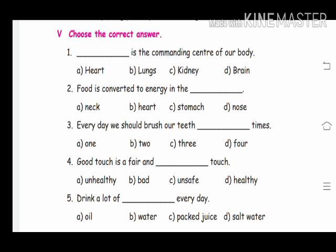Fourth one — good touch, easier, fair and dash touch. Options: A-Unhealthy, B-Bad, C-Unsafe, D-Healthy. The answer is healthy. Good.